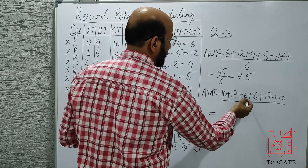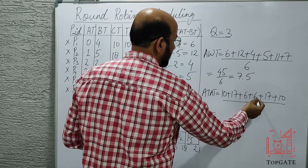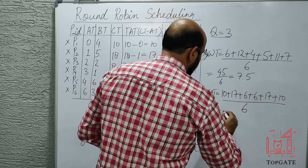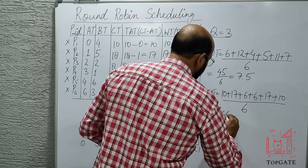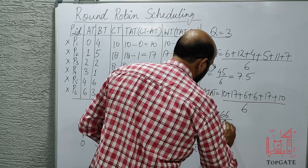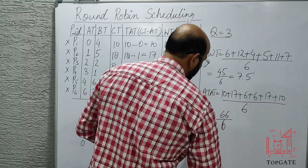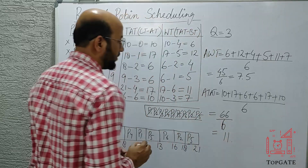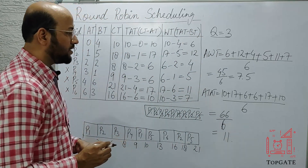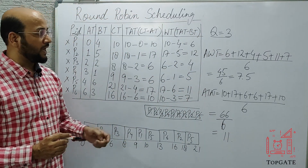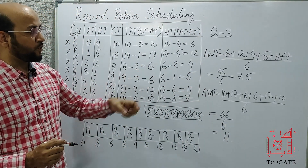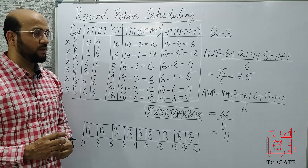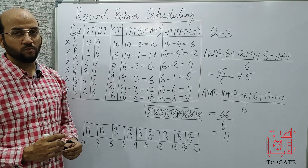The average turnaround time = (10+17+6+6+17+10) / 6 = 66/6 = 11. So 11 is the average turnaround time and 7.5 is the average waiting time. Thank you so much.